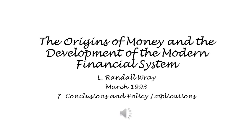One might imagine a system that could be based on exogenous money, but this would have to be a system in which private pursuit of wealth denominated in the money of account was eliminated. Thus, an exogenous money system might work in a socialist society, where the object of production is to provide goods and services. However, a monetary capitalist society is based on accumulation of money-denominated wealth and not on production of goods and services. As Veblen argued, the purpose of capitalist production is to produce pecuniary values.